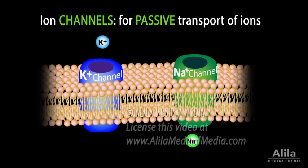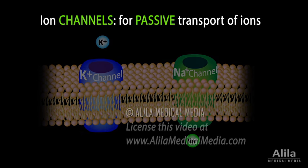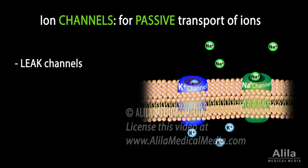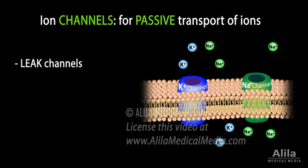Common types of ion channels include leak channels. These channels are almost always open, allowing more or less steady flow of ions. Examples are potassium and sodium leak channels in neurons.